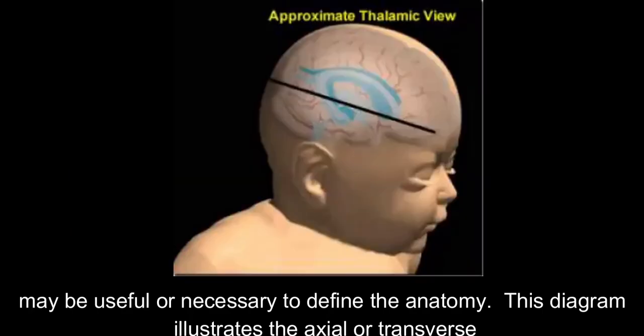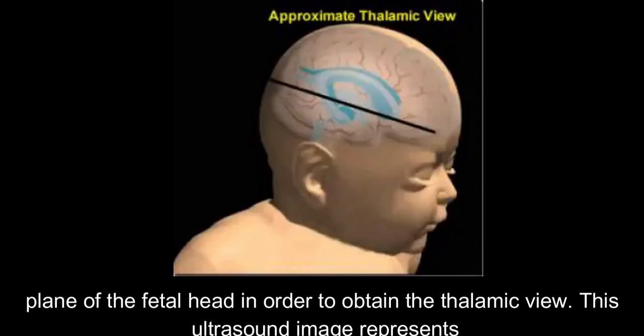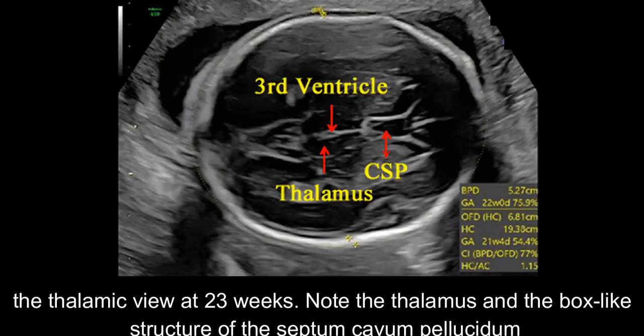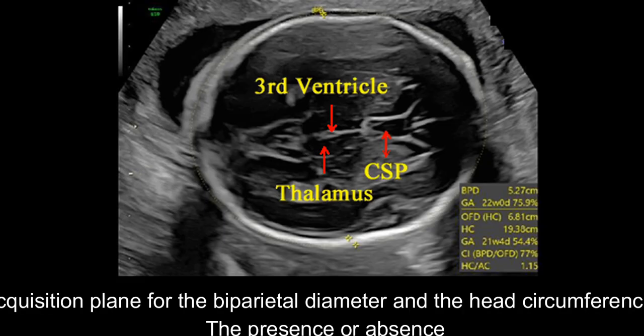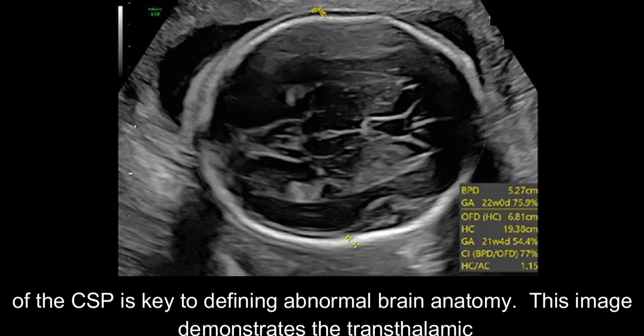This diagram illustrates the axial or transverse plane of the fetal head in order to obtain the thalamic view. This ultrasound image represents the thalamic view at 23 weeks. Note the thalamus and the box-like structure of the cavum septi pellucidae, CSP. The cerebellum should not be visualized in this plane. The transphalamic plane is the acquisition plane for the biparietal diameter and the head circumference. The presence or absence of the CSP is key to defining abnormal brain anatomy.